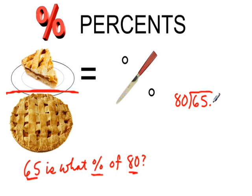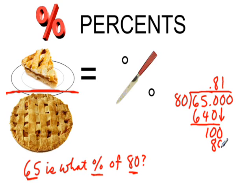And we're going to have a decimal here. 80 will go into 650 8 times. 8 times 80 is 640. Bring down. 80 goes into 100 once. 1 times 80 is 80. Bring down. Well, 80 goes into 200 twice, and 2 times 80 is 160. Subtract. And bring down another 0. 80 goes into 400 five times, and that will be even.